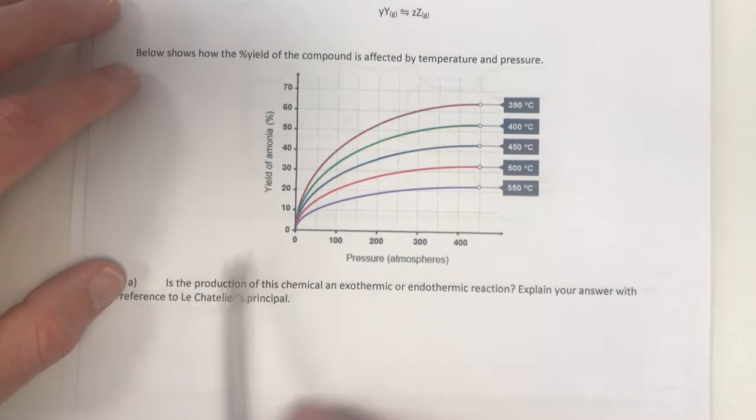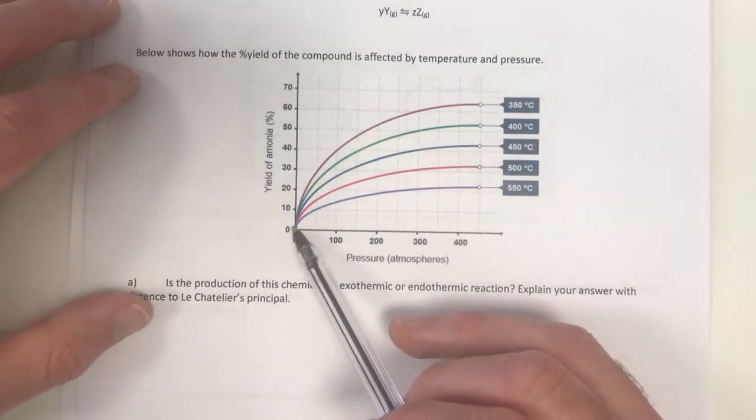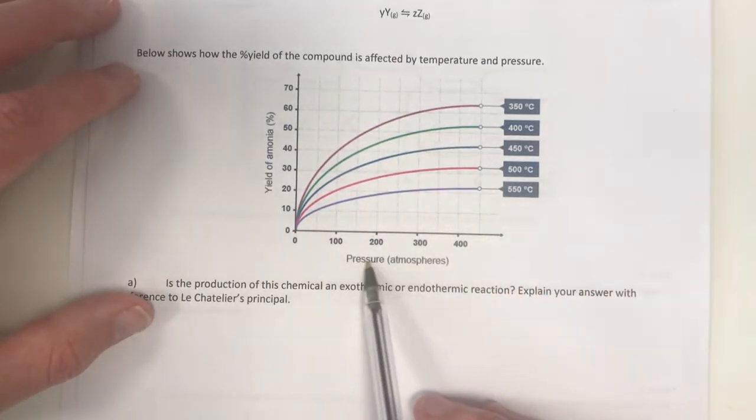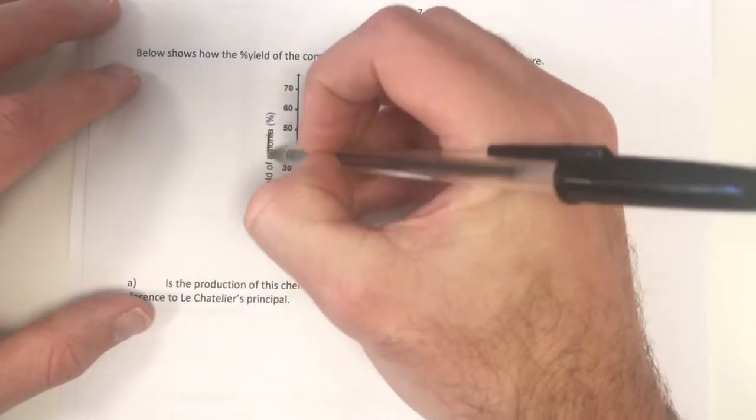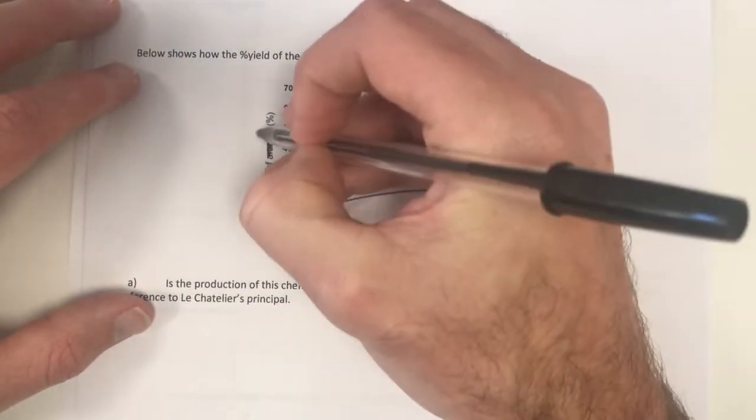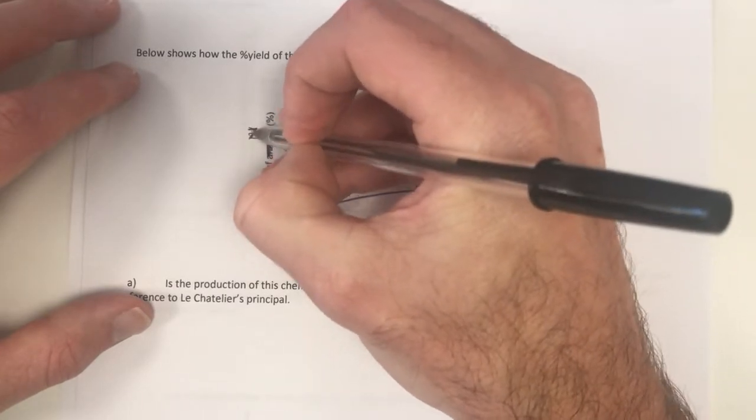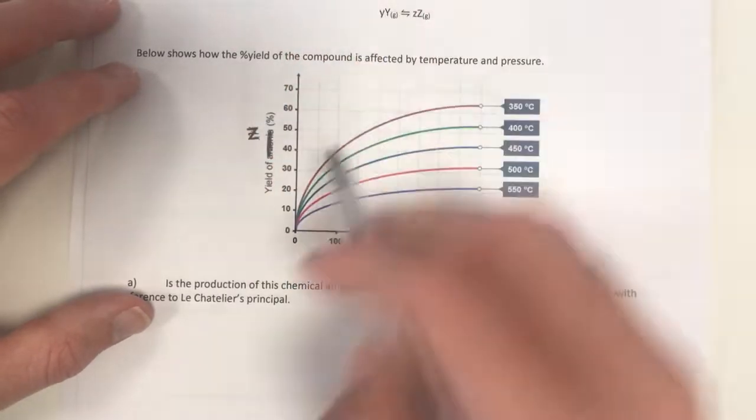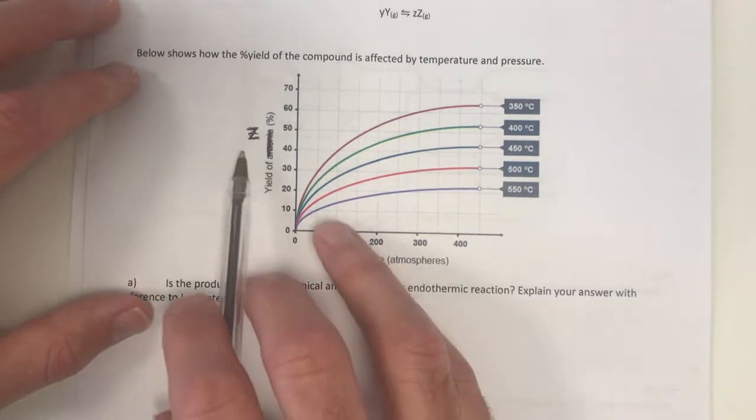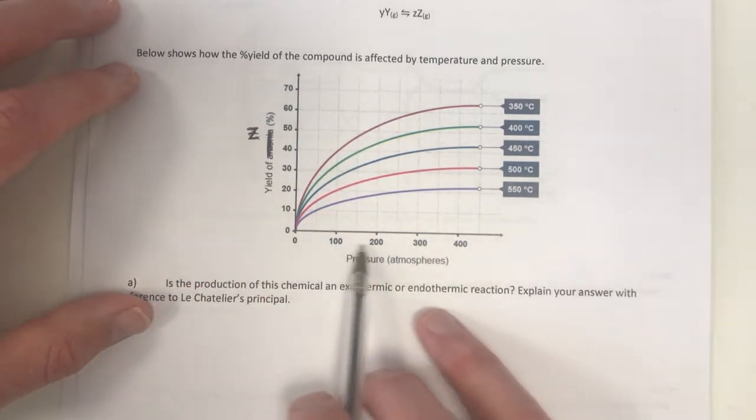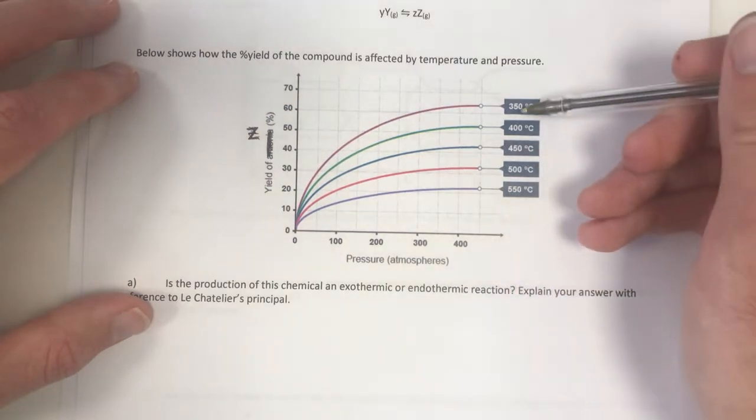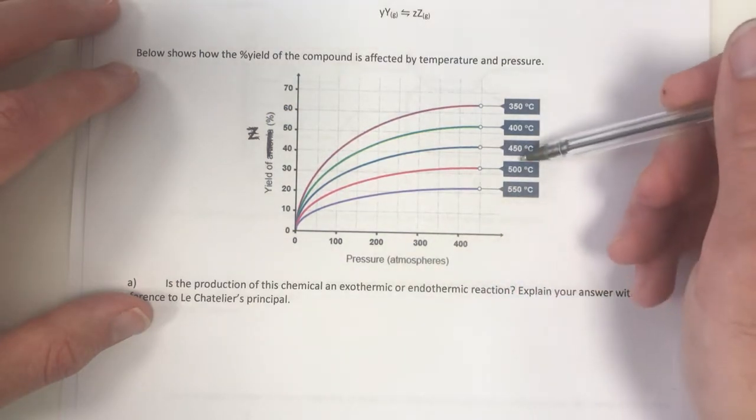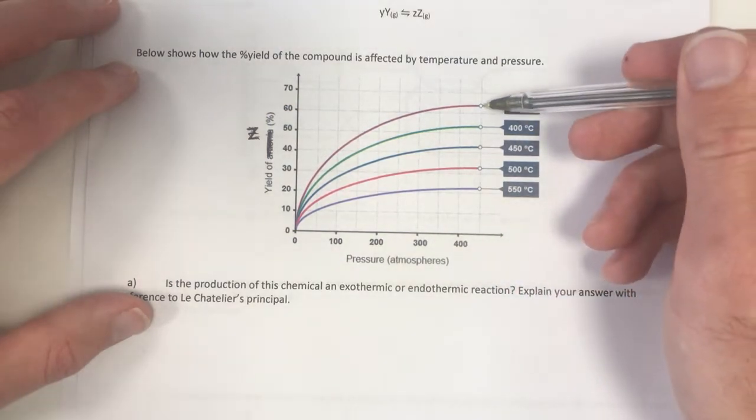We've got a graph here which shows that as we increase pressure, we increase the yield. This is ammonia. This should just be yield of compound z. I've obviously stolen this graph and not thought about it. But anyway, let's move on. This is showing increasing pressure increases the yield of z, but also as you decrease temperature, you increase the yield of z.